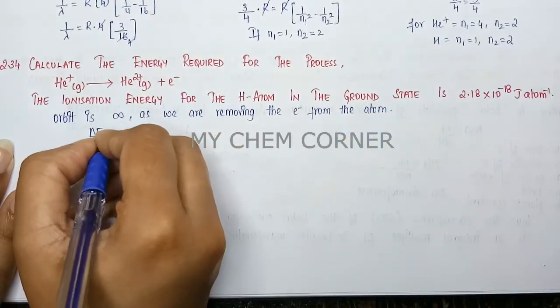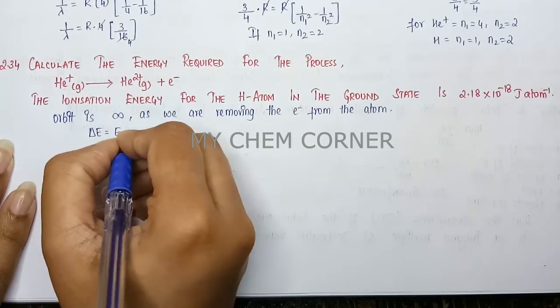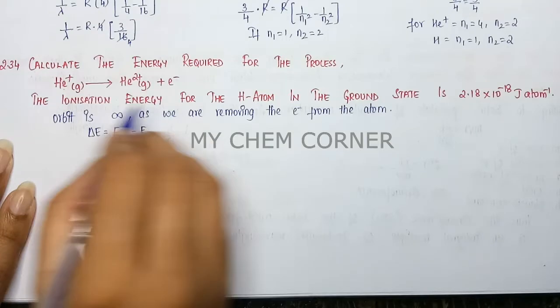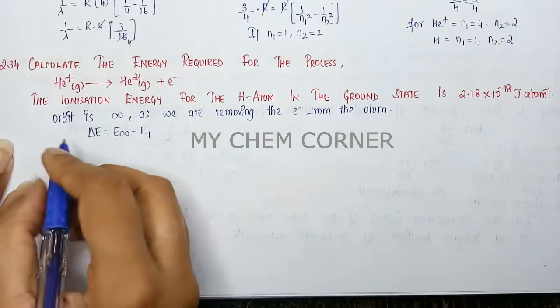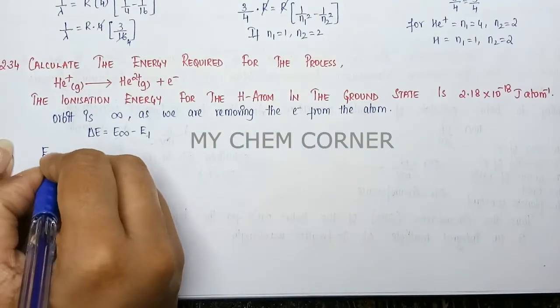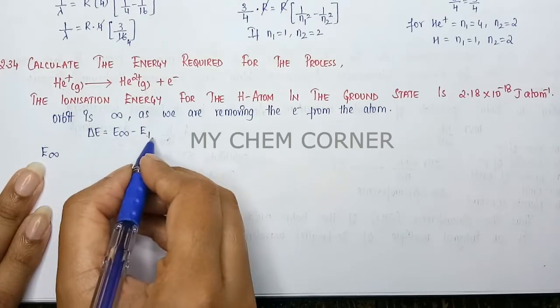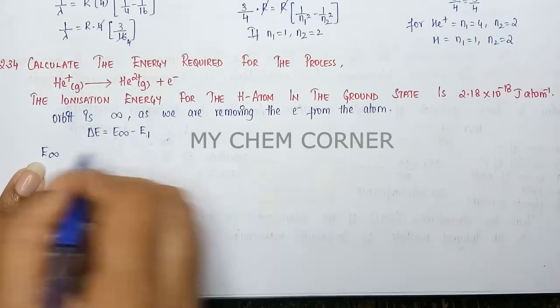The difference in energy is going to be E∞ - E₁. E₁ because it's from the ground state. We'll first calculate E∞, then calculate E₁, and then subtract both.